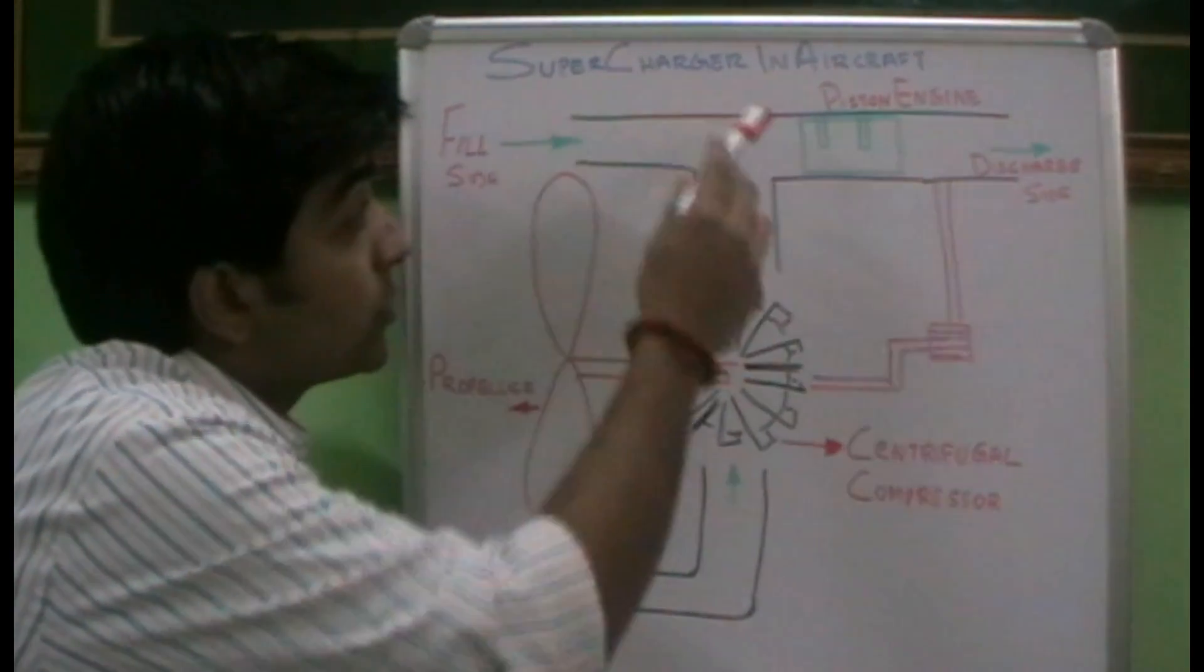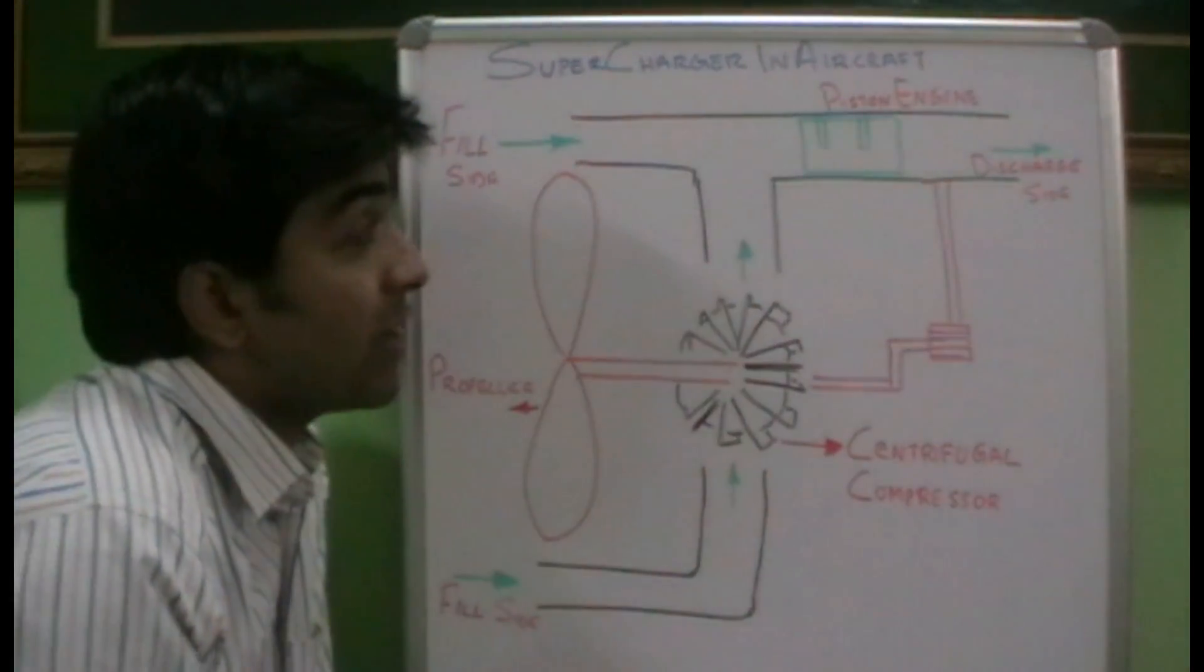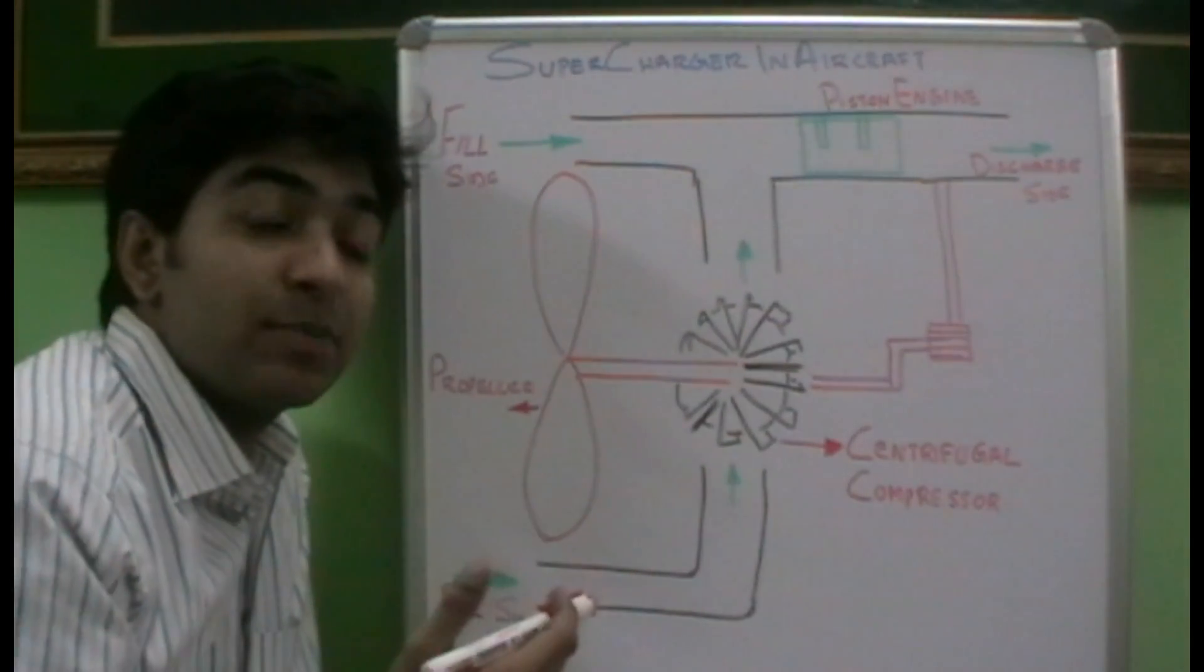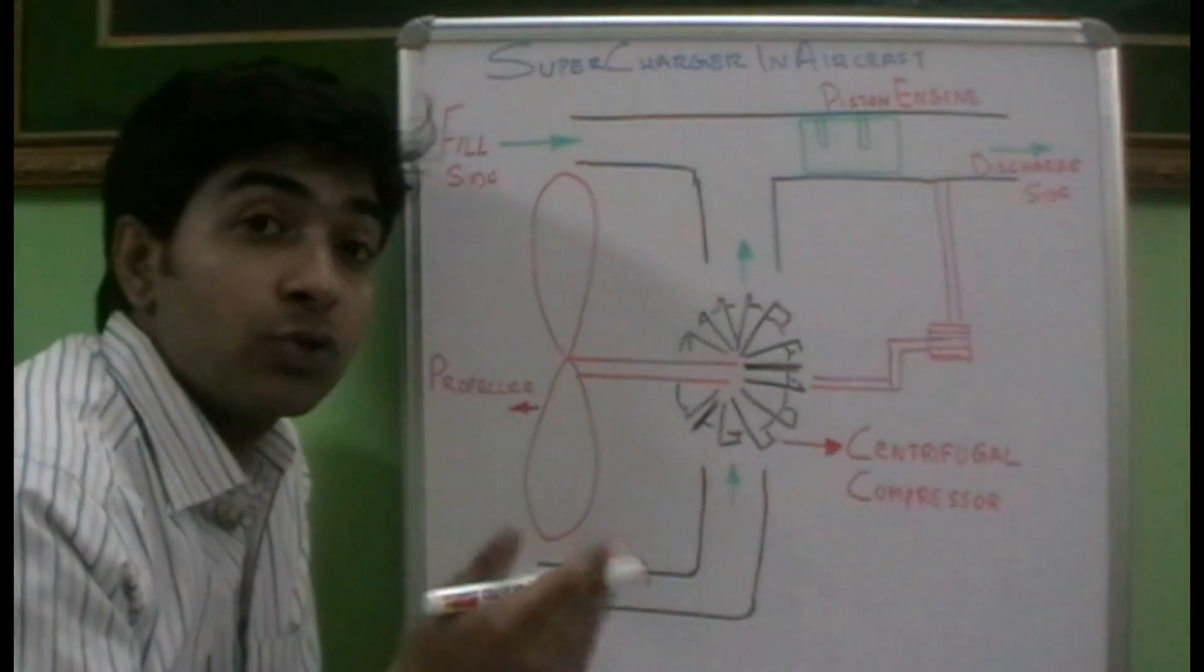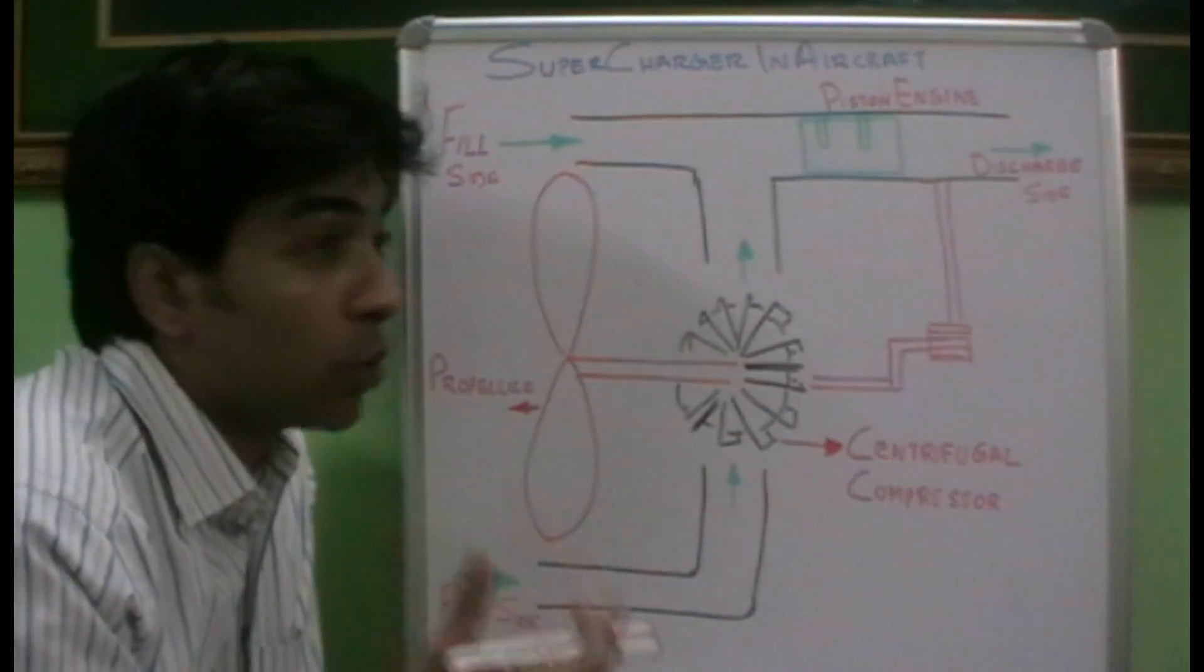With the help of a supercharger, an aircraft engine can produce about 46% more horsepower and also 31% more torque.